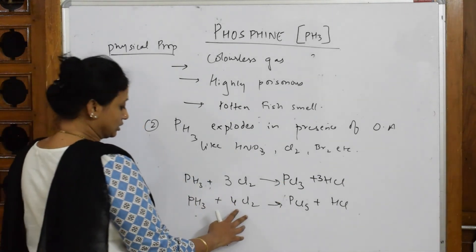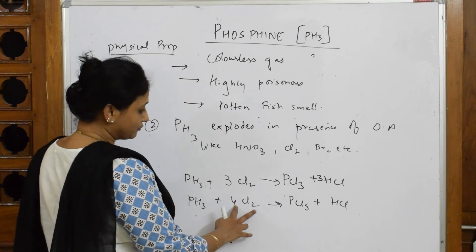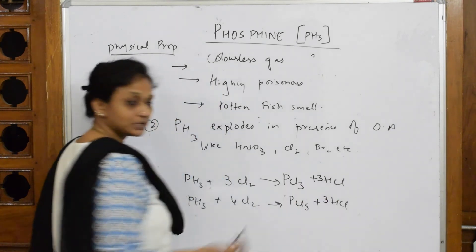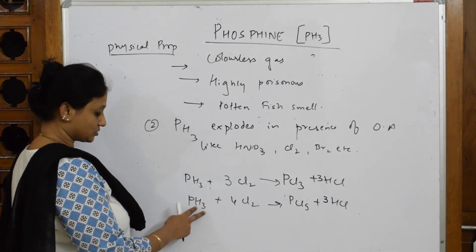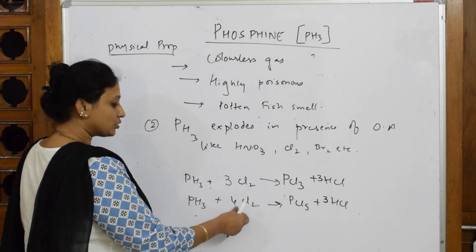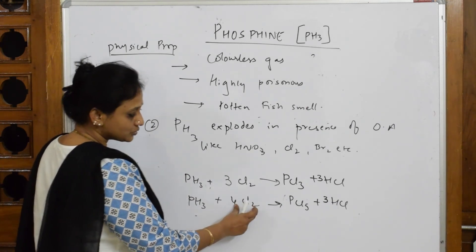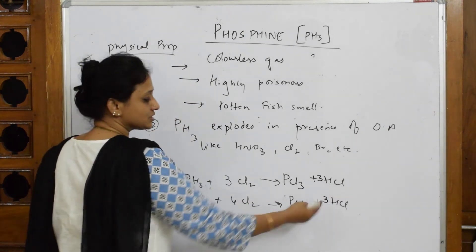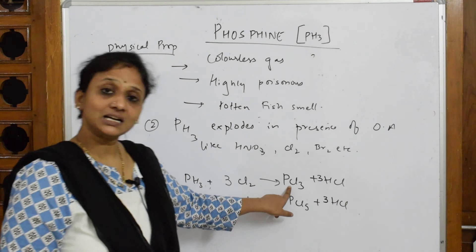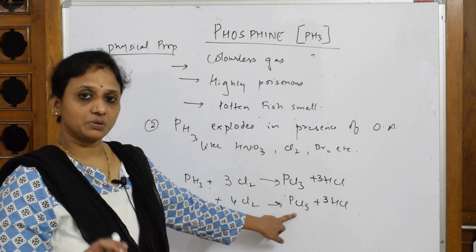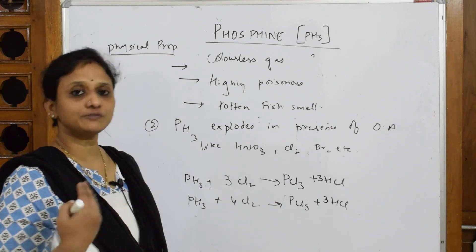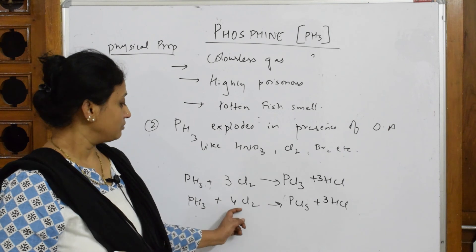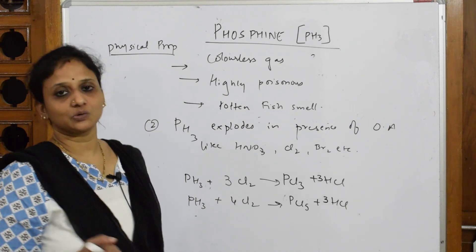With four moles of chlorine, the product is PCl5 plus HCl. Balancing: four chlorines give eight; PCl5 has five and three from HCl gives eight. Hydrogen is three, so three HCl. So: PH3 + 4Cl2 → PCl5 + 3HCl. Remember — three moles gives phosphorus trichloride, four moles gives phosphorus pentachloride.